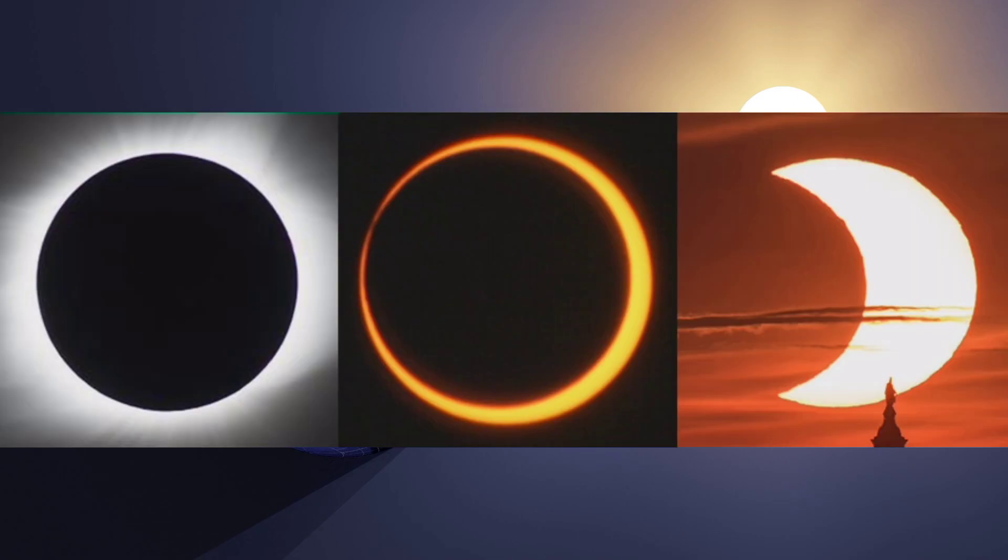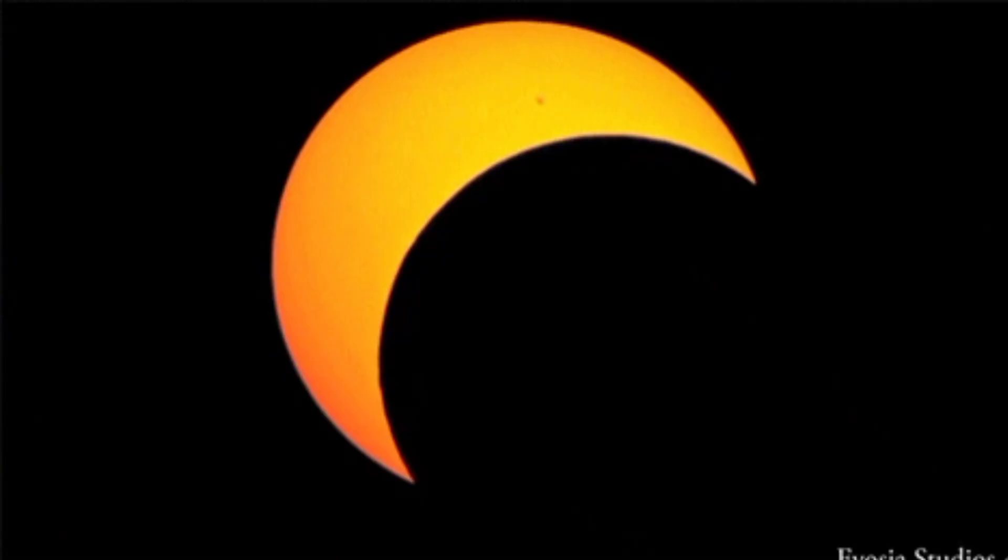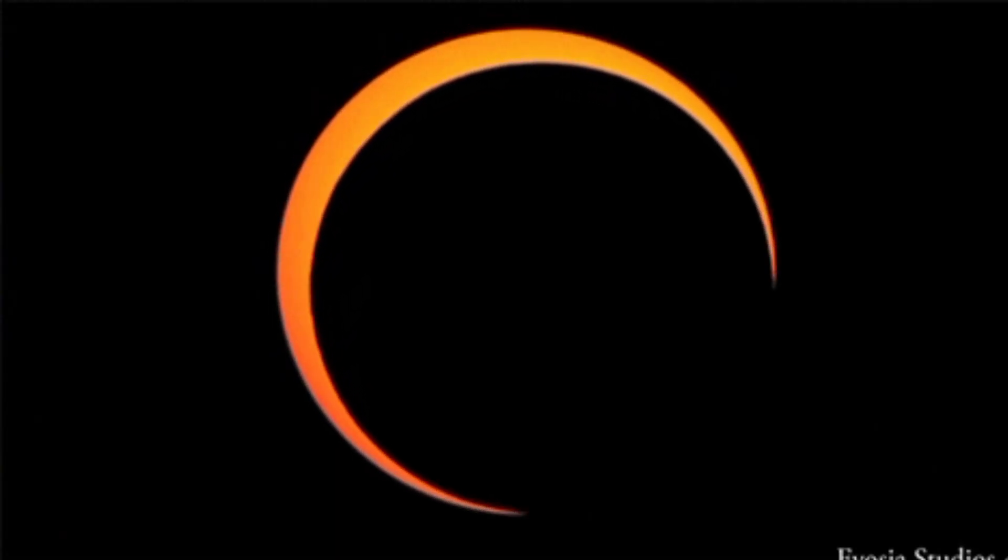There are three main types of solar eclipses: partial, total, and annular. In a partial eclipse, only part of the Sun is obscured by the Moon.